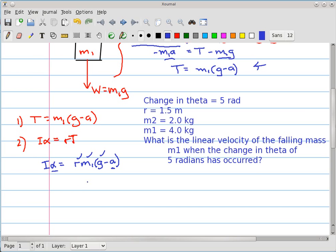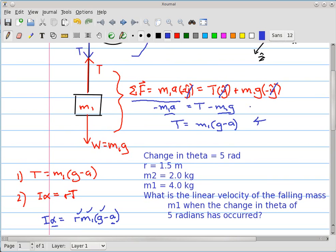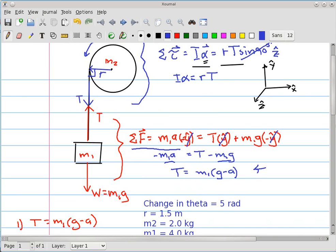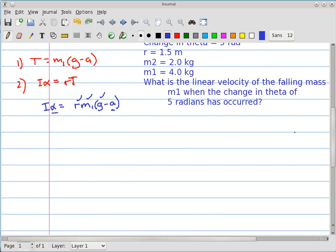Well, it turns out that the acceleration of this falling mass here, that m1, is the same as the tangential acceleration of the point on the outer edge of the pulley. So really, we can write a third equation, we'll write it here, 3, a, I could write, subscript it with a t to show it's tangential, equals a, this a, the acceleration of the mass, and that is equal to r times alpha. So there is an expression that relates the two.